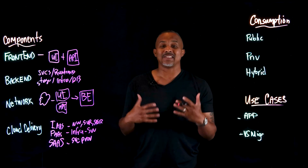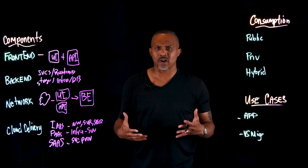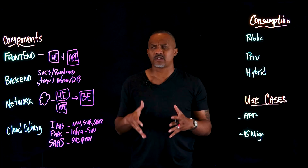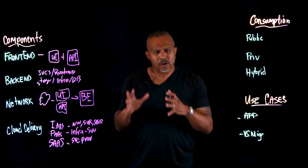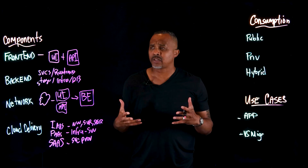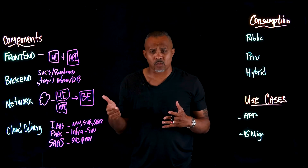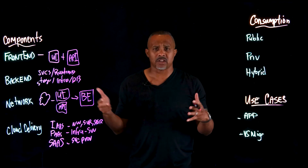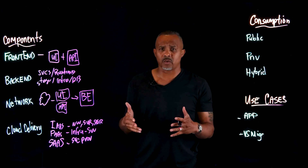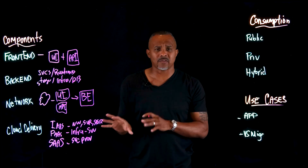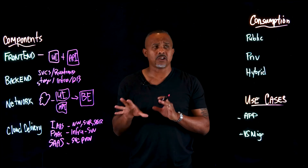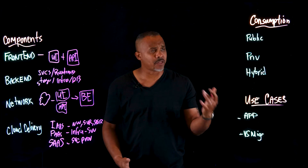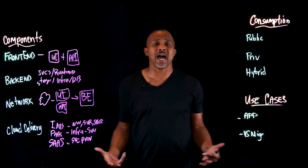So I've taken my application to have these four different consumption areas — components that I have to think about: front end, back end, the networking, and the actual tiers that I want to take advantage of. The next thing you have to do is figure out how you want to consume the particular tiers of the cloud. For those, we have the public, private, and hybrid.